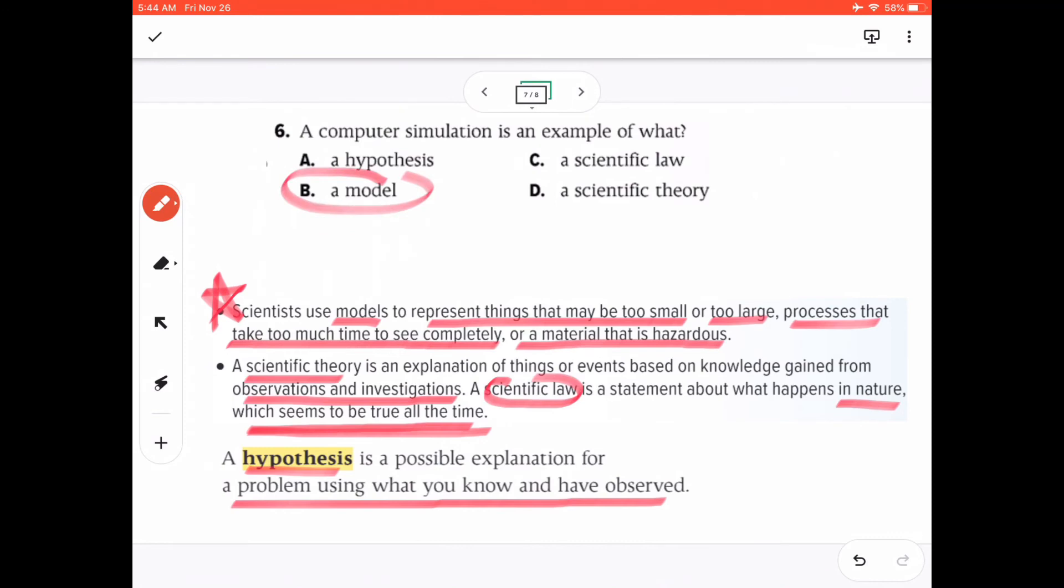Because a computer simulation will actually model a process which will take too much time. Or maybe a scientific model could be drawings in your, let's say, in some apps, you can make drawings of buildings and things. So this is a scientific model.